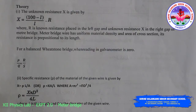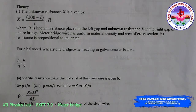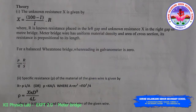Theory: the unknown resistance X is given by X = (100 − L) / L × R, where R is the known resistance placed in the left gap and unknown resistance X is in the right gap of the meter bridge. Since the meter bridge wire has uniform material density and area of cross section, its resistance is proportional to its length.